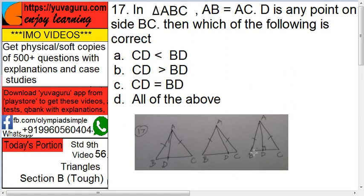So BD equals to DC. So this will be all of the above—that's the correct answer.